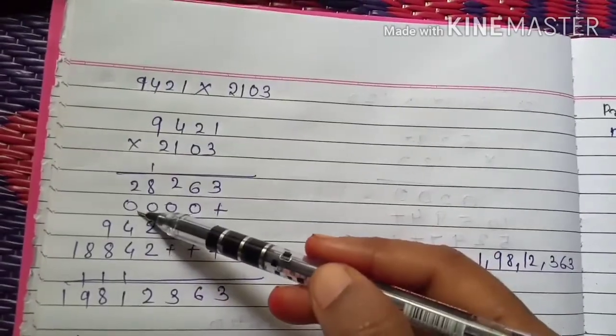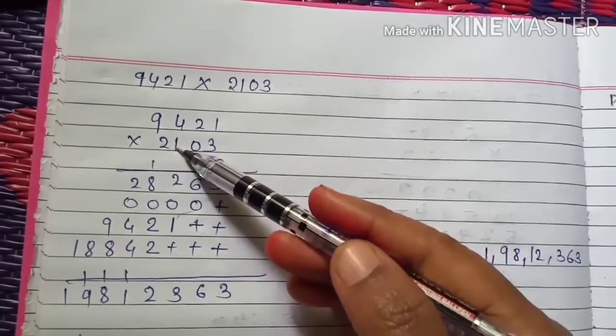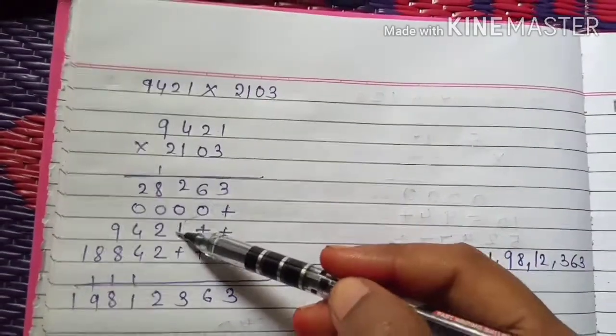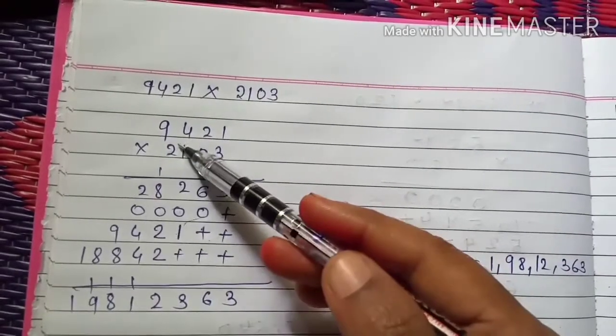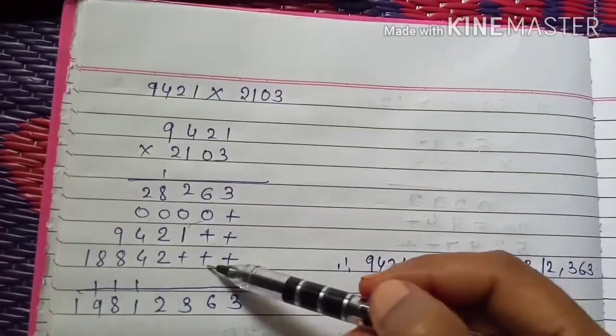0 into 1 is 0, 0 into 2 is 0, 0 into 4 is 0, 0 into 9 is 0. Then put downside, put 2 plus signs. Then start multiplication with the hundred place. 1 into 1 is 1, 1 into 2 is 2, 1 into 4 is 4, 1 into 9 is 9. Then put 3 plus signs.